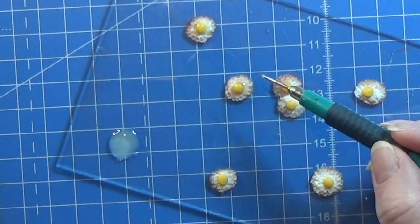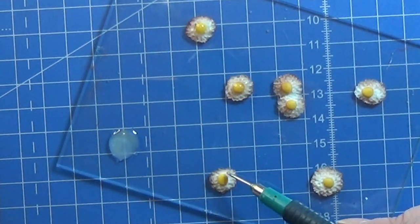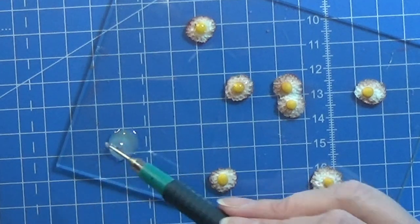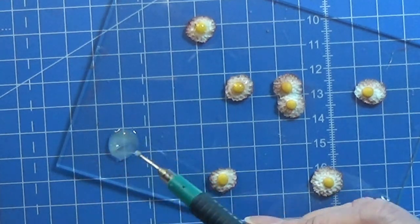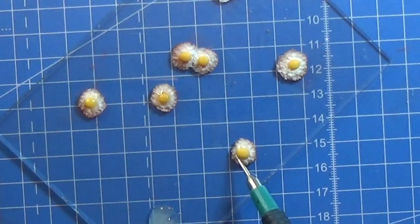Then I take a tiny bit of liquid Fimo and place over the egg yolk so it looks kind of more realistic when they have been baking. And then I'm just going to pop it into the oven and bake it.